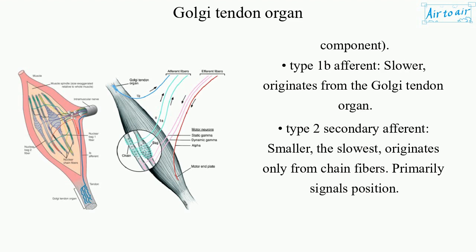Type 1b afferent is slower and originates from the Golgi tendon organ. Type 2 secondary afferent is smaller and the slowest, originating only from chain fibers. It primarily signals position.